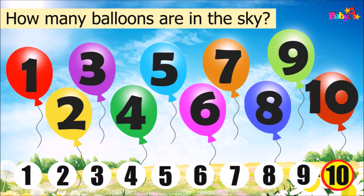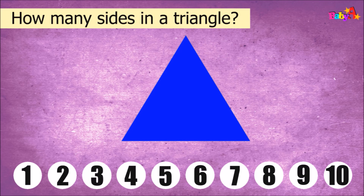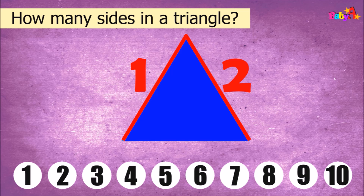How many sides in a triangle? 1, 2, 3. Triangle has three sides.